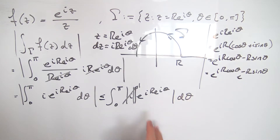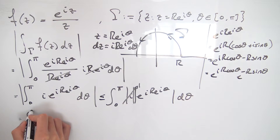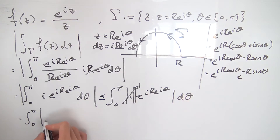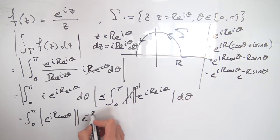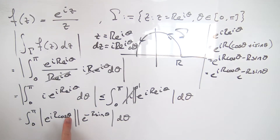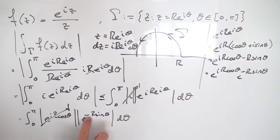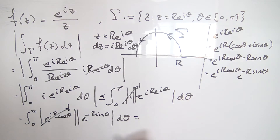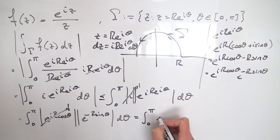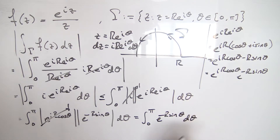Substituting back, we take the absolute value of e to the i r cosine theta times e to the minus r sine theta. Since theta is real, e to the i times a real number has absolute value one. And e to the minus r sine theta is a positive real number, so no absolute value is needed. The integral simplifies to the integral from 0 to pi of e to the minus r sine theta d theta.